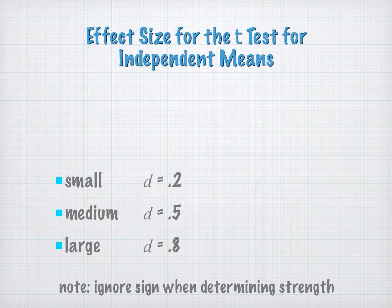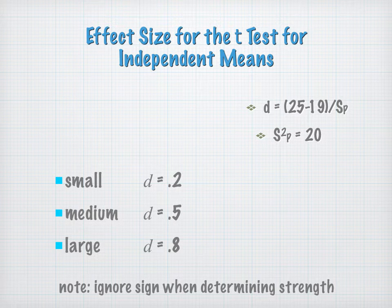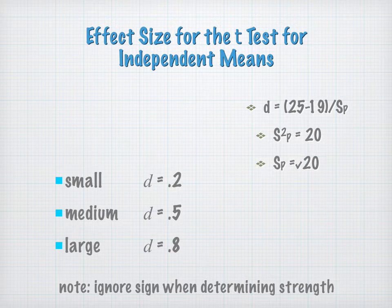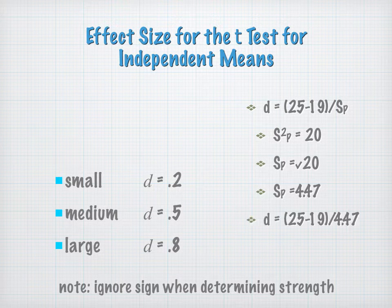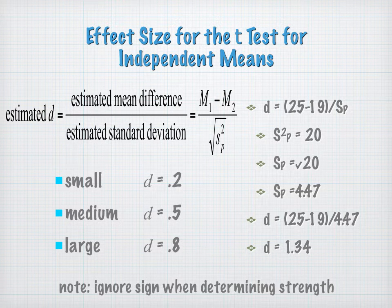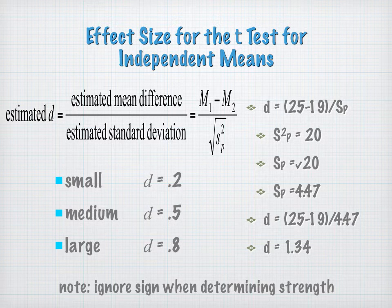Here is an example from the practice problem we did earlier today. We have 25 minus 19 divided by the square root of the pooled variance. We take the pooled variance of 20, take the square root to get 4.47, and then divide 6 by 4.47 to get 1.34. On the scale of small, medium, or large, this would be a very, very large effect size. We took that pooled variance, took the square root to get 4.47, and divided by the mean difference.